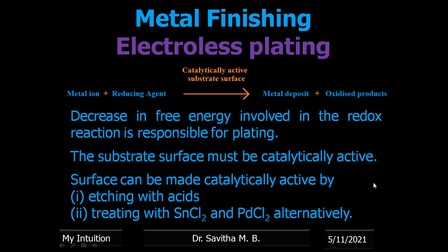To make the cathode surface catalytically active there are two methods: etching by acids, or treating with stannous chloride and palladium chloride alternately. First dip in stannous chloride for 10 minutes, then dip in palladium chloride for 10 minutes. At that point the outermost layer of the substrate becomes catalytically active, attracting the reducing agent which in turn liberates electrons. Metal ions from the solution accept the electrons and get deposited.